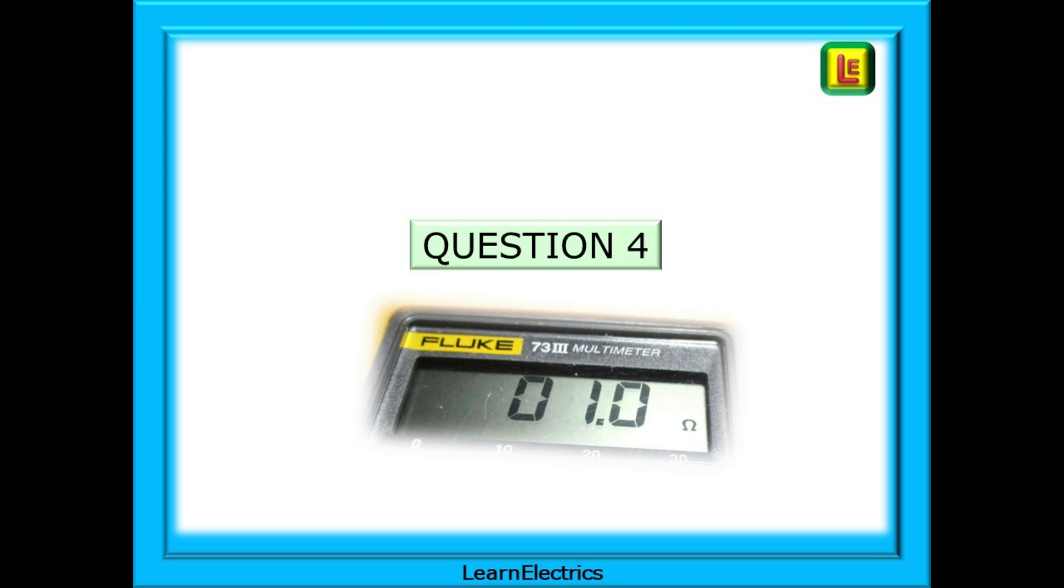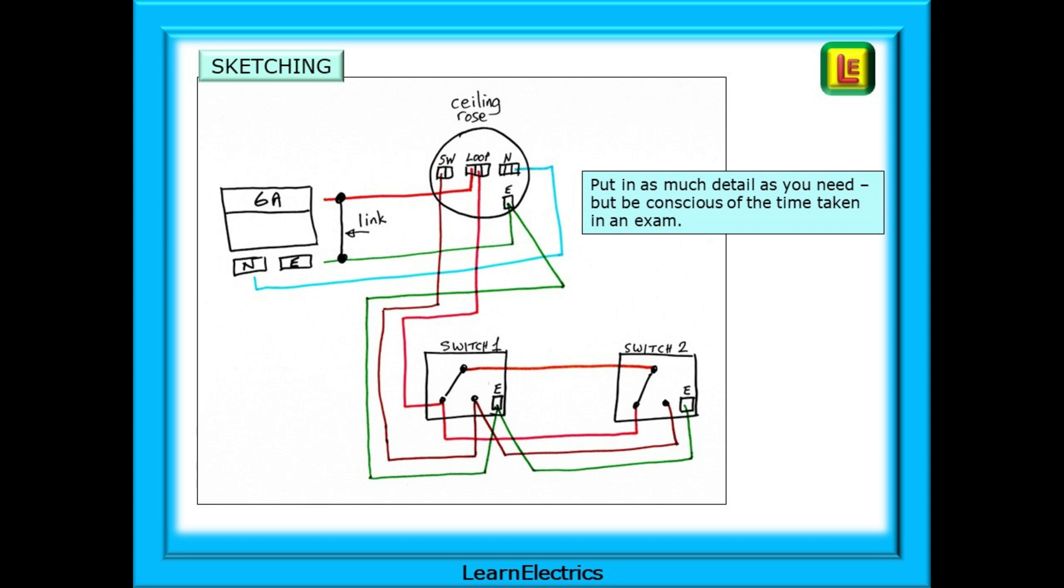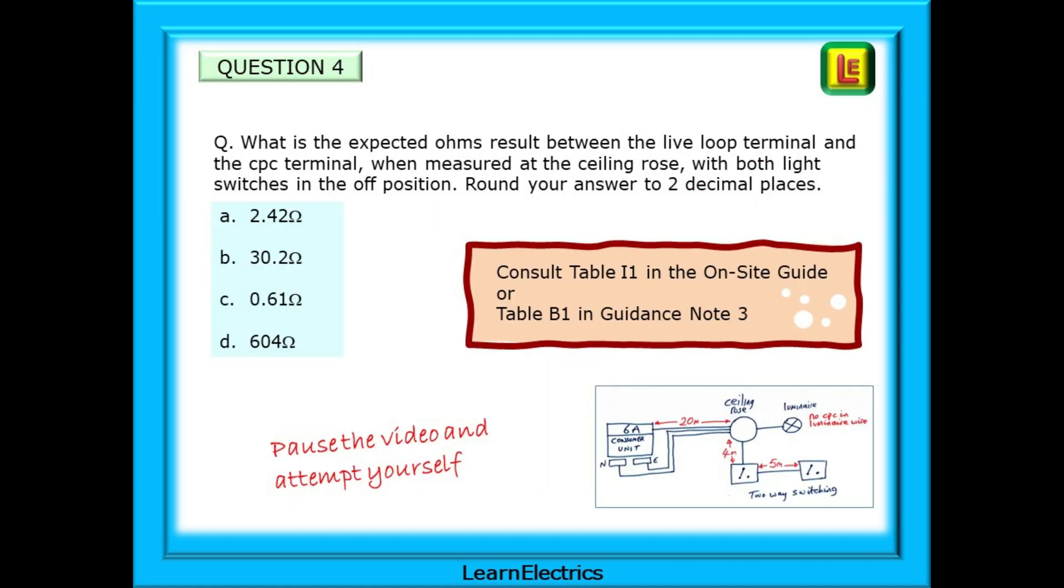And so to question number 4. For some questions you might want a little more detail. If you do, redraw it. Whatever helps you to understand and choose the right answers. Put in as much detail as you need but be conscious of the time taken in an exam. The clock will not stop whilst you create your masterpiece. So work quickly if you need to make another drawing. So back to question number 4. What is the expected ohms result between the live loop terminal and the CPC terminal when measured at the ceiling rose with both light switches in the off position? Pause the video and find the correct answer.